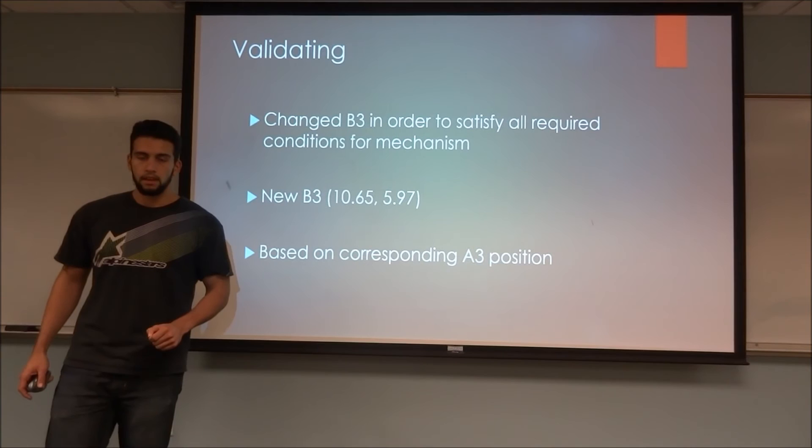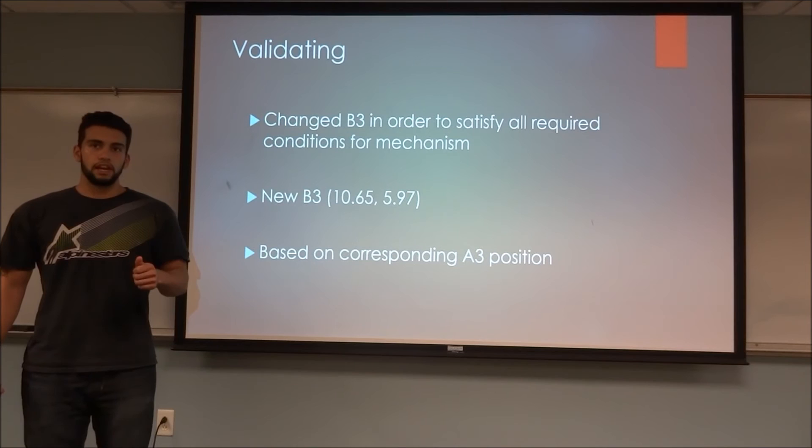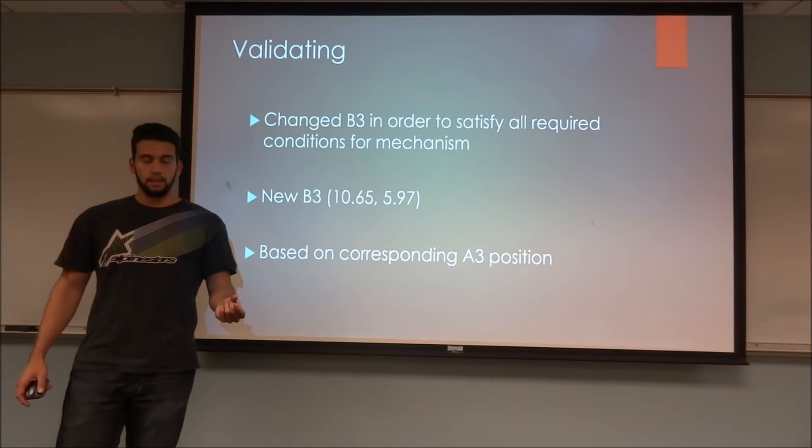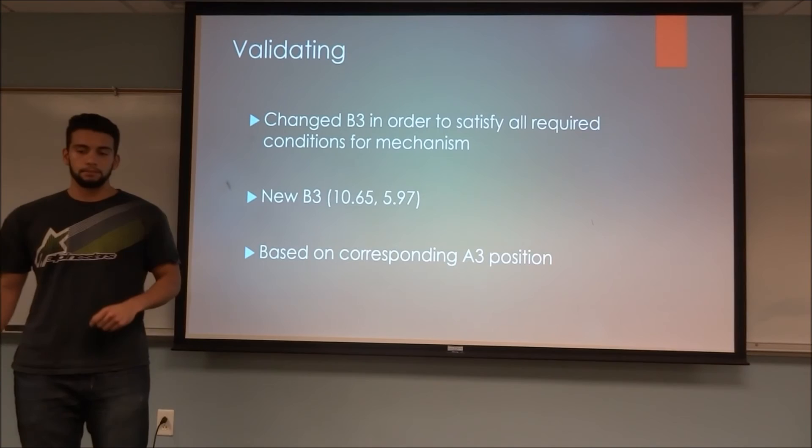Therefore, we changed our B three coordinate to 10.65 in the X direction and 5.97 in the Y direction. Now, this is based on the corresponding A three coordinate. We did this by verifying where A three was located, and it was in fact located where it was supposed to, and we then compared where it was with respect to time.